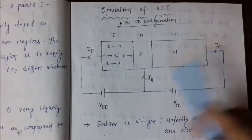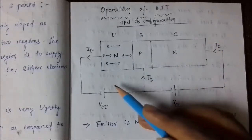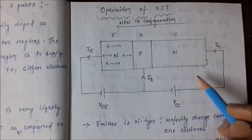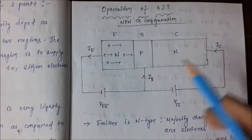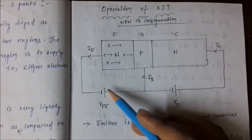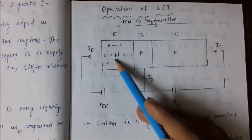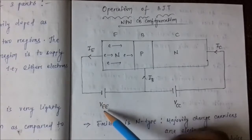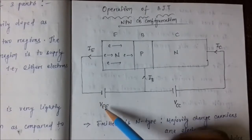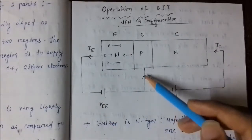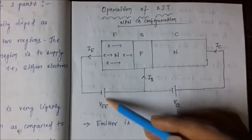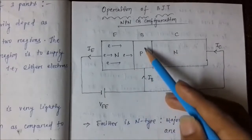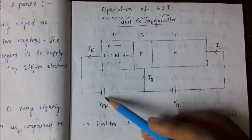An important property of BJT is that the input junction is always forward biased and the output junction is always reverse biased. The input junction is forward biased because the n-type emitter is connected to the negative terminal of the power supply, and the p-type base is connected to the positive terminal.